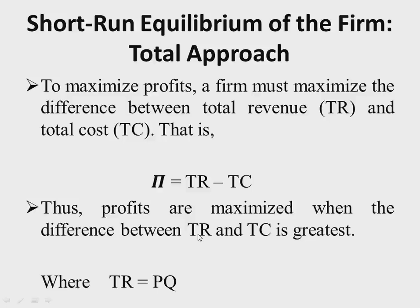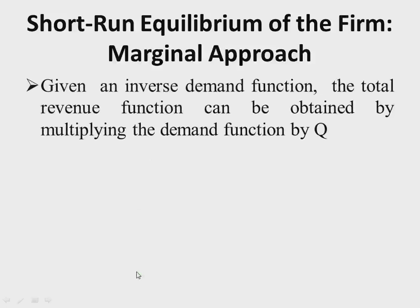If you subtract total cost — the costs incurred in your production process — what you will remain with is the profit for the firm. Given an inverse demand function, the total revenue function can be obtained by multiplying the demand function by Q, which is the output. When we have a direct demand function Q = A − BP, the inverse demand function will be P = A − BQ, noting that the A values differ between these forms after rearranging.